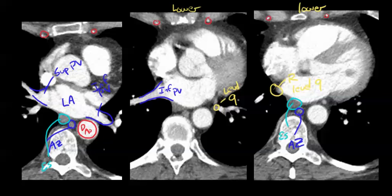The phrenic nerve runs pretty close to the veins on the right side — up here it's going to be on the SVC, then it lays within about a centimeter or so of the veins. On the left side, the phrenic nerve stays further out in front, somewhere in here — so this will be your left phrenic nerve and this is your right phrenic nerve. That's the anatomy of the mediastinum along with the nodal stations.